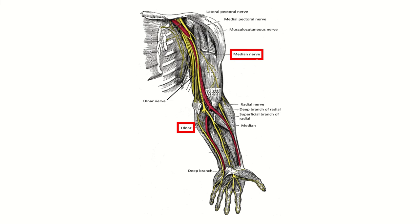The median nerve arises from the brachial plexus and all its functions will be lost when transected here. It travels down, crosses the elbow joint, and reaches the forearm and hand, supplying different areas. When it crosses the antecubital fossa, it gives off the anterior interosseous nerve and the main median branch.